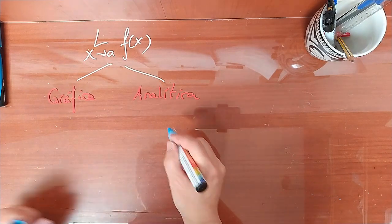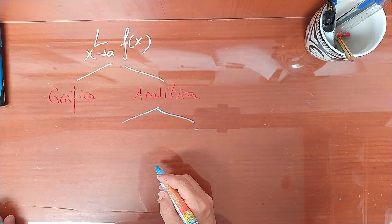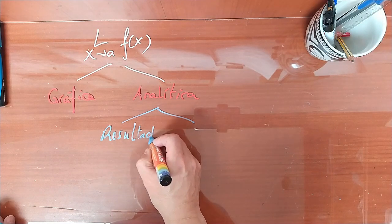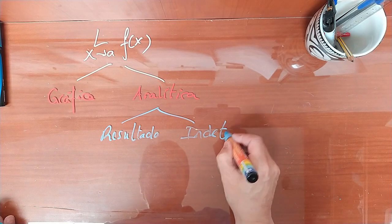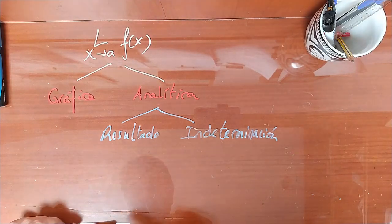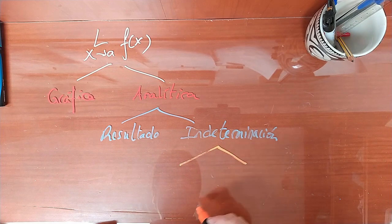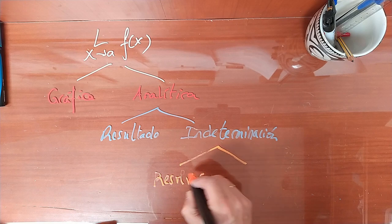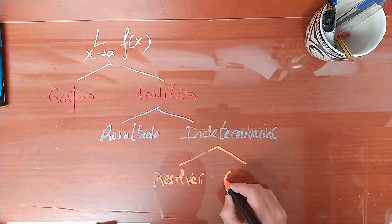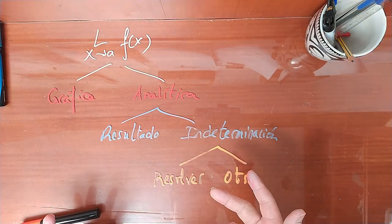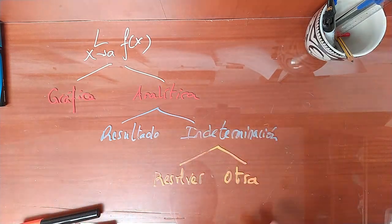Si es de forma gráfica, normalmente es muy fácil, enseguida lo veis. Si es de forma analítica, lo que tenéis que hacer es, como siempre, sustituir la variable. Y os va a quedar o un resultado final, o una indeterminación. En el caso de que os quede una indeterminación, vais a tener dos posibilidades: que la resolváis a la primera o que os dé otra indeterminación. Es cierto que te puede dar otra indeterminación.